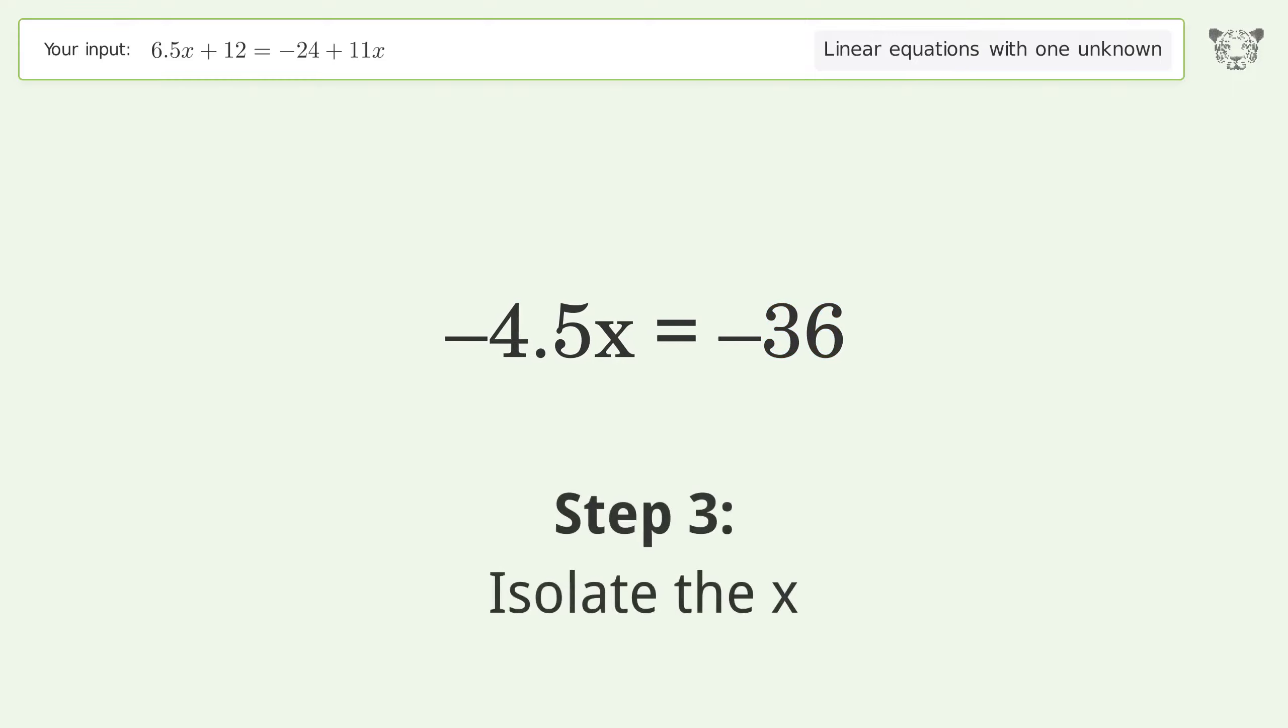Isolate the x. Divide both sides by negative 4.5.